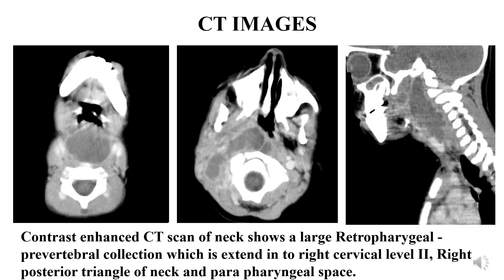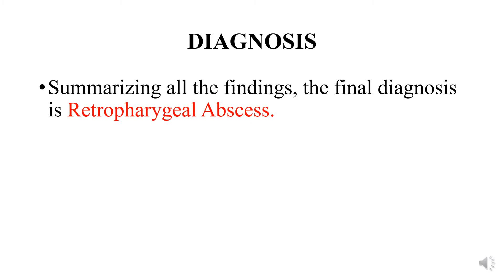Contrast enhanced CT scan of neck shows a large retropharyngeal prevertebral collection which extends into the right cervical level 2, right posterior triangle of neck and parapharyngeal space. Summarizing all the findings, the final diagnosis is retropharyngeal abscess.